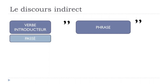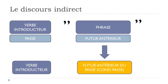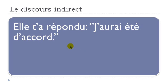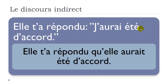If we've got still the past in the first part and the futur antérieur in the second part, this futur antérieur will become what we call futur antérieur du passé — but technically it's the conditionnel passé. So: 'elle t'a répondu, j'aurais été d'accord' — the futur antérieur 'j'aurais été' becomes 'elle aurait été' in the conditionnel passé. Result: 'elle t'a répondu qu'elle aurait été d'accord'. It looks similar to the previous form, but it is the conditionnel passé.